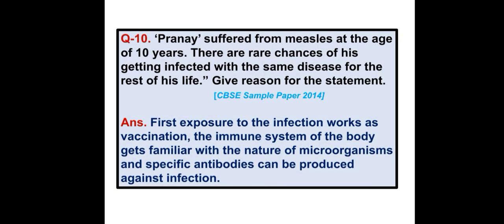Pranay suffered from measles at the age of 10 years. There are rare chances of his getting infected with the same disease for the rest of his life. Give reason. Answer: First exposure to the infection works as vaccination. The immune system gets familiar with the microorganism and specific antibodies can be produced against the infection. That is why the chances of getting infected again with the same disease is very rare.